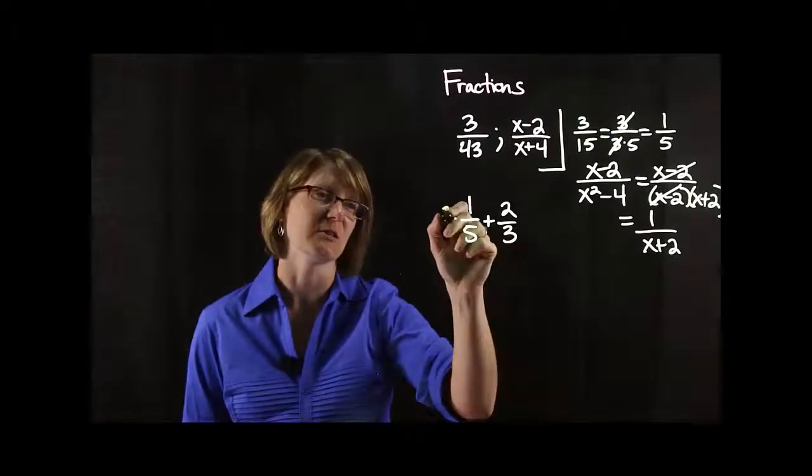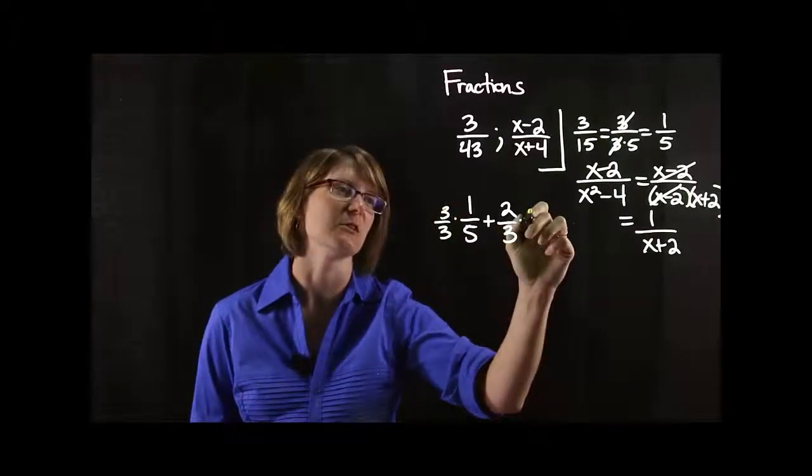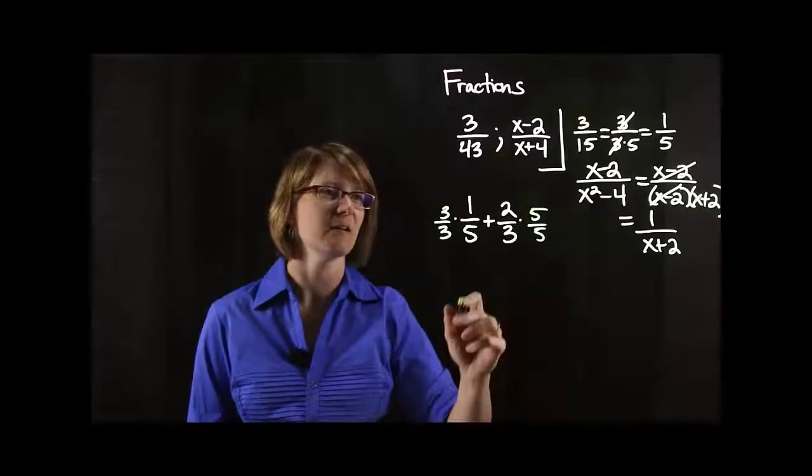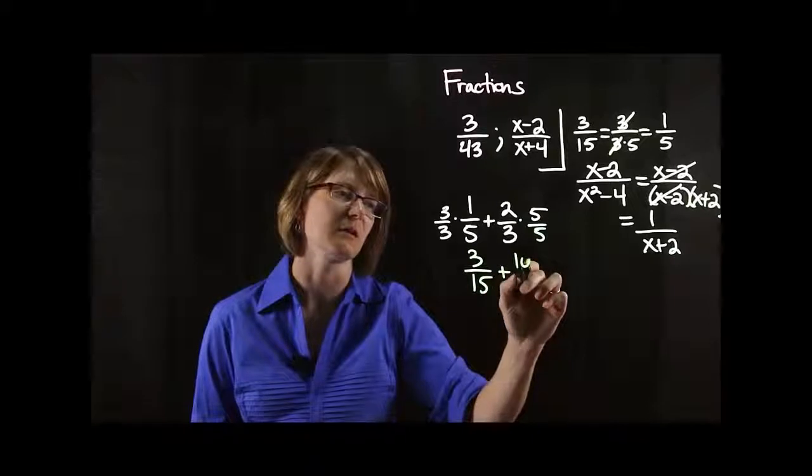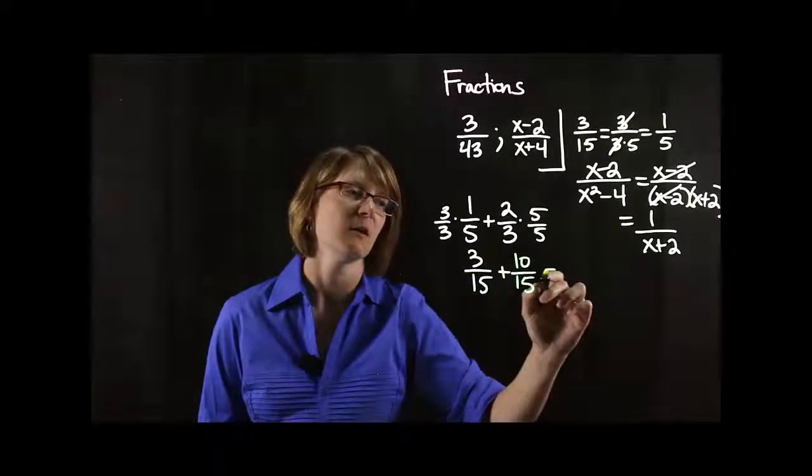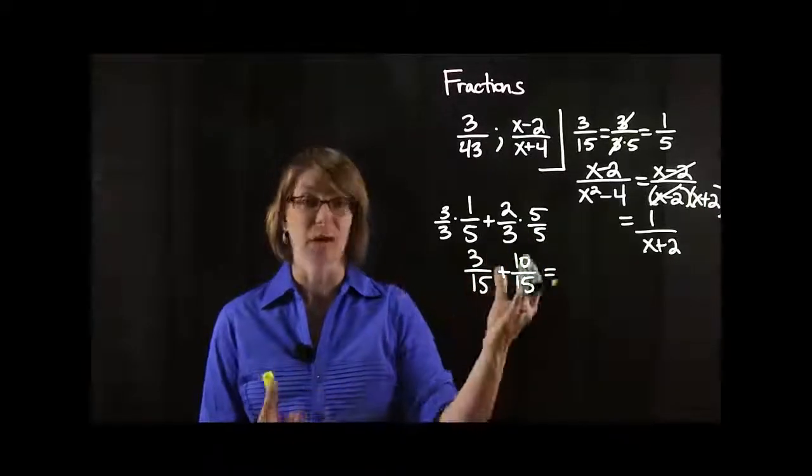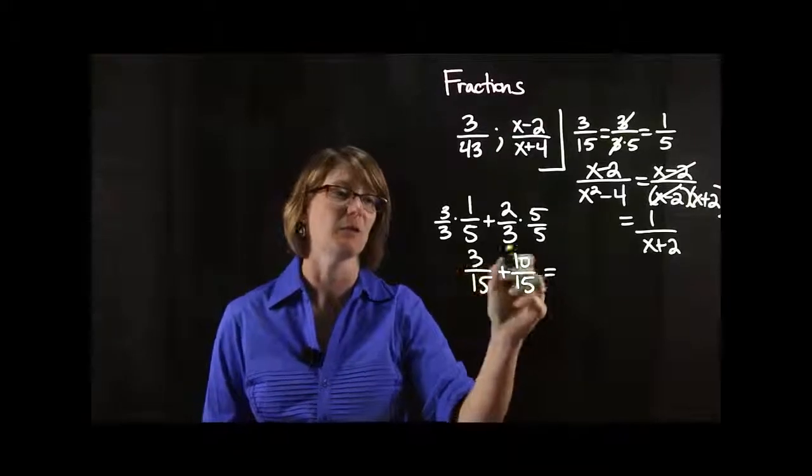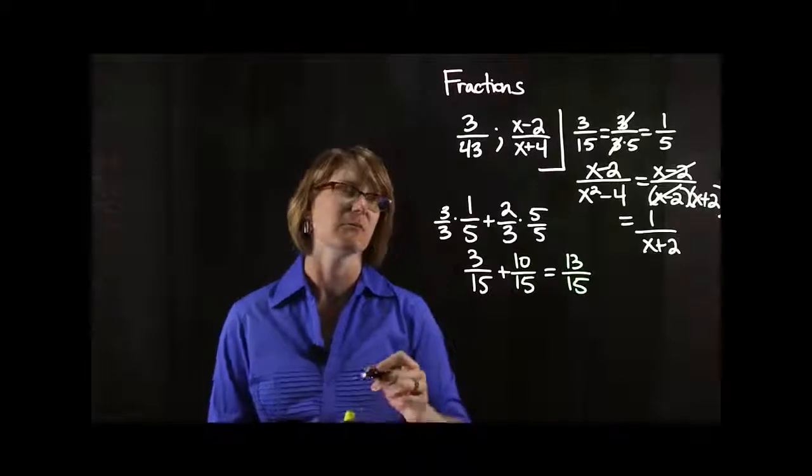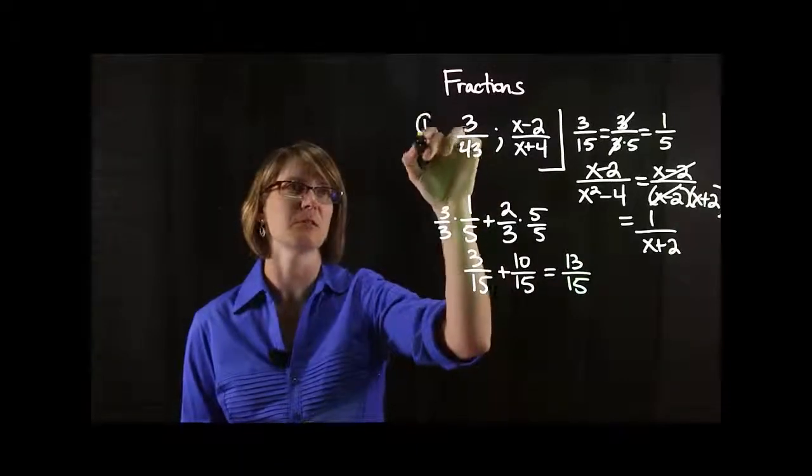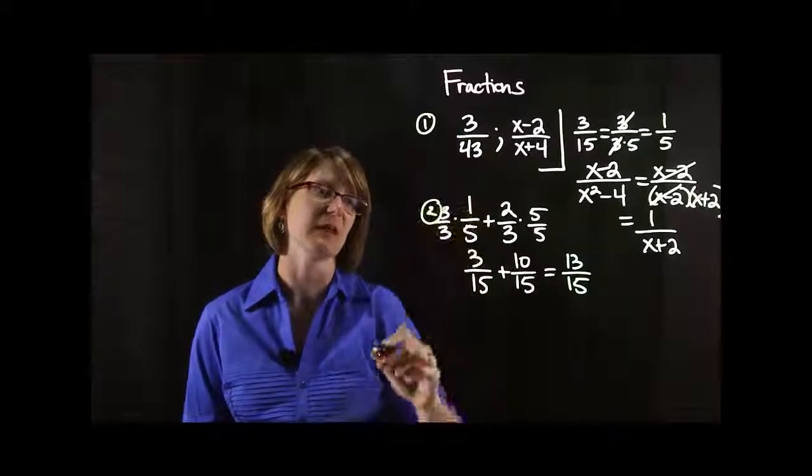So we can change this into, let's see, multiply this one by 3 over 3, multiply this one by 5 over 5. So we end up with 3 fifteenths plus 10 fifteenths. Which now that we've got the common denominator, we can now combine like terms basically. So combine those numerators together. We end up with a grand total of 13 fifteenths. So first thing we did was simplifying. Second thing we did was adding.